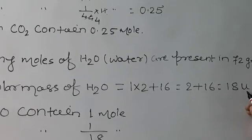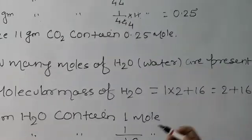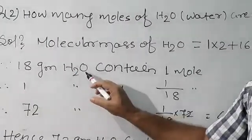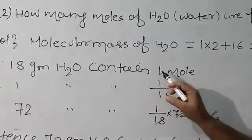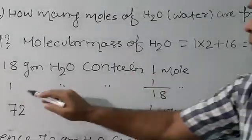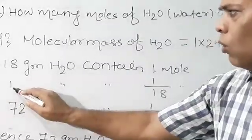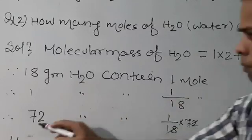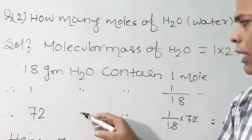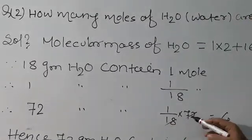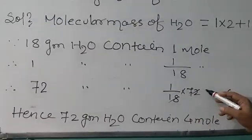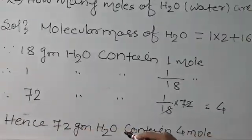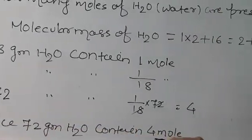18 atomic mass units. Gram molecular mass is equivalent to 1 mole. So 18 grams of H2O contains 1 mole. Therefore, 1 gram H2O contains 1 by 18 mole. Hence, 72 grams H2O contains 1 by 18 into 72, which equals 4. Hence, 72 grams of H2O contains 4 moles.